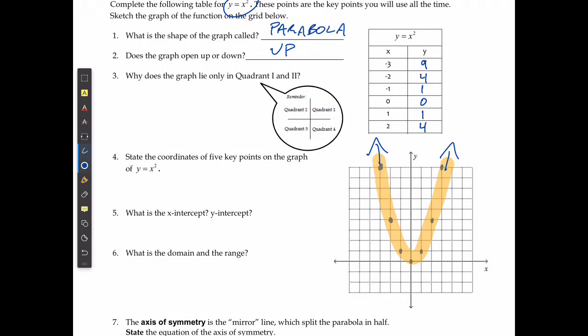Why does the graph lie only in quadrants 1 and 2? Well, because if I take any rational number and I square it, it will always be positive. A negative times a negative is positive. A positive times a positive is positive. So, the solution should always wind up being positive once I square it.